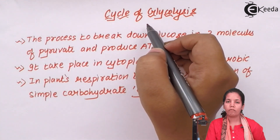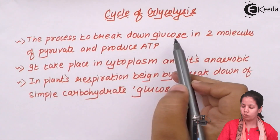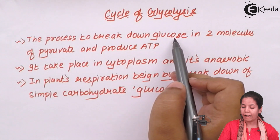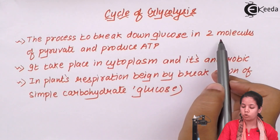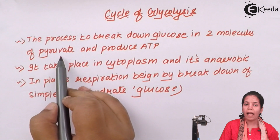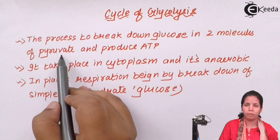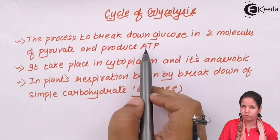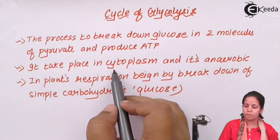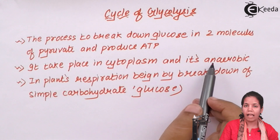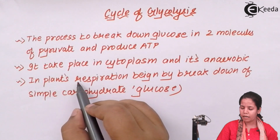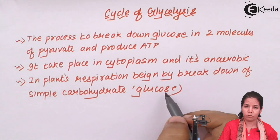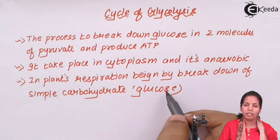The cycle of glycolysis is the process to break down a single glucose molecule. After an 11-step reaction, what you get is two molecules of pyruvate — pyruvic acid and pyruvate are both correct terms. During this process, intermediate places produce adenosine triphosphate (ATP), the energy currency molecule. This process takes place in the cytoplasm and is anaerobic — independent of oxygen. In plants, respiration begins by the breakdown of glucose and energy in the form of ATP is produced.